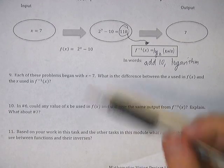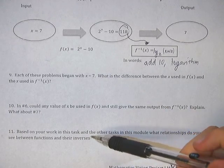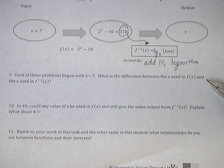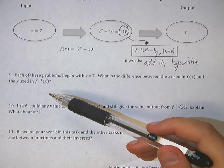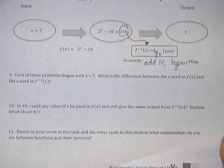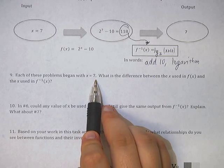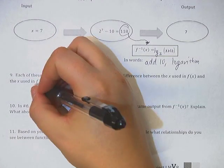What you end up with, when we pop this guy in, is you end up with log base 2 of 128, which gives us 7. So add 10. And then we take the logarithm to undo the 2 to the x power.